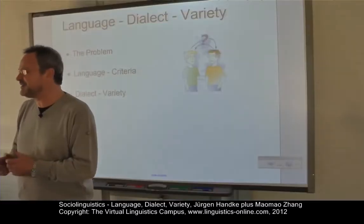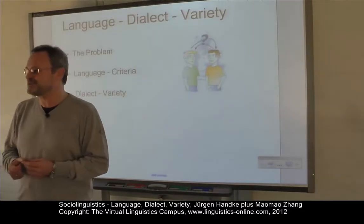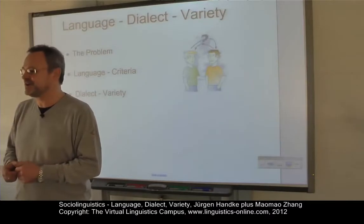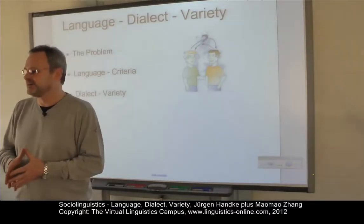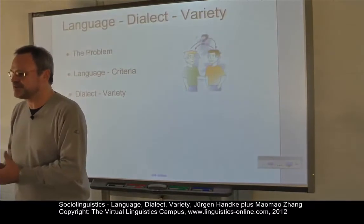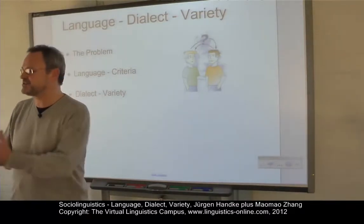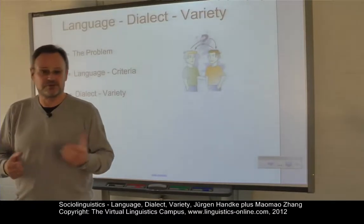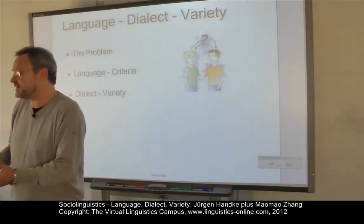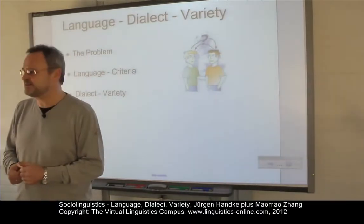One of the most difficult theoretical issues in linguistics is to distinguish between language and dialect, or language and varieties. At first sight, there may be no problem at all. If two people speak differently, there seem to be only two possibilities: if they understand each other, they must speak varieties of the same language. If not, they can be said to speak different languages. But is it really that simple?